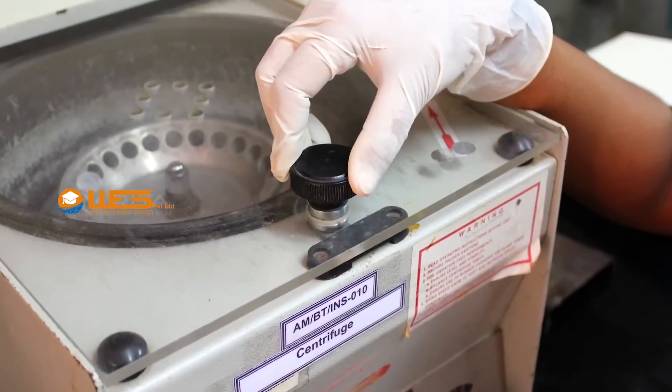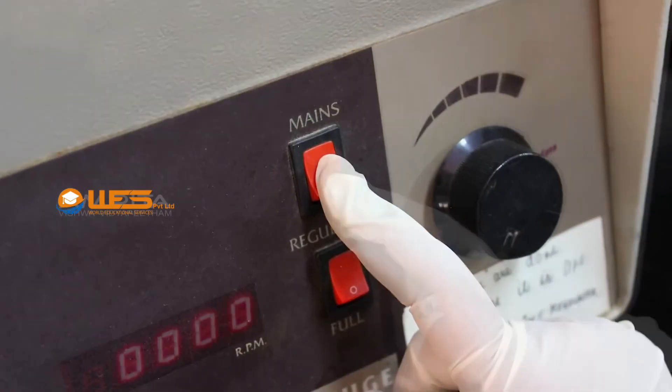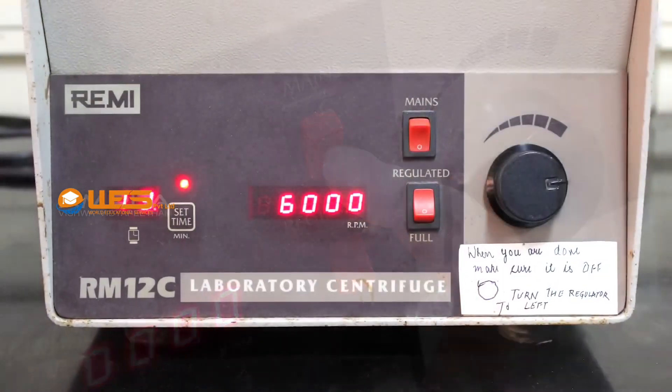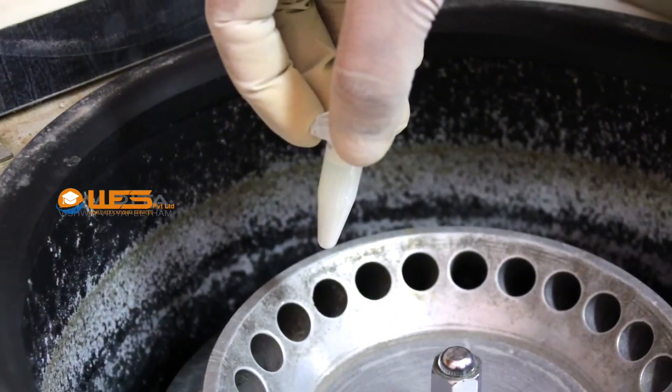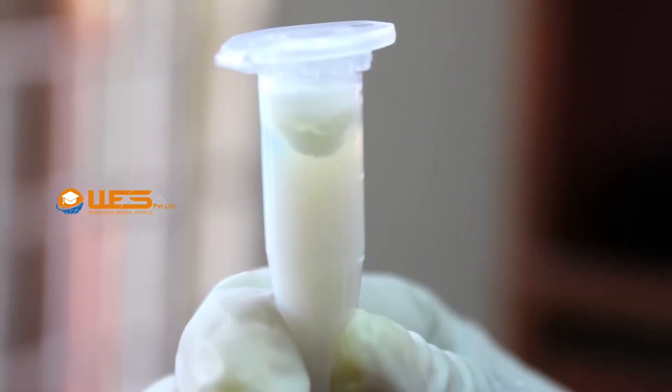Then close the centrifuge machine and centrifuge the milk for 13 minutes. After 13 minutes, take the centrifuge tube containing milk from the machine and observe the changes.